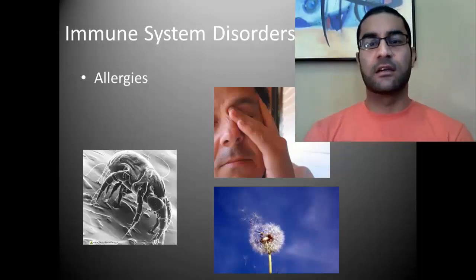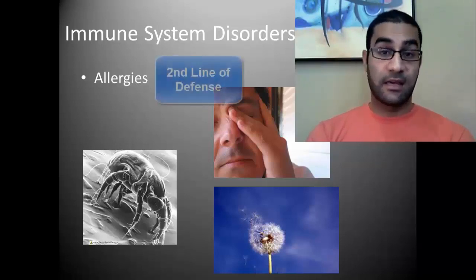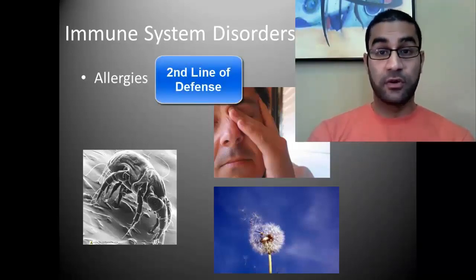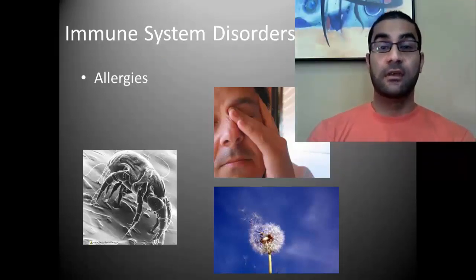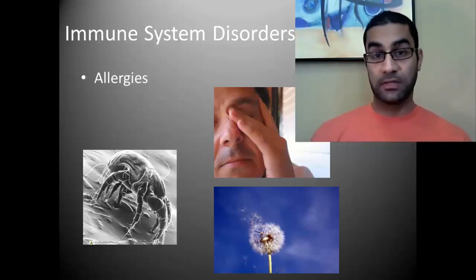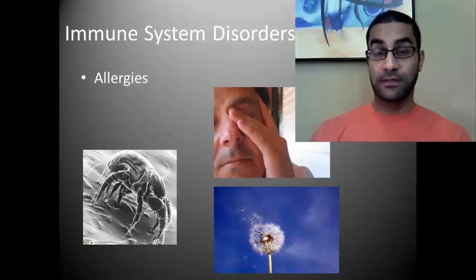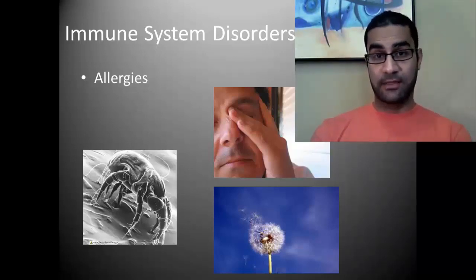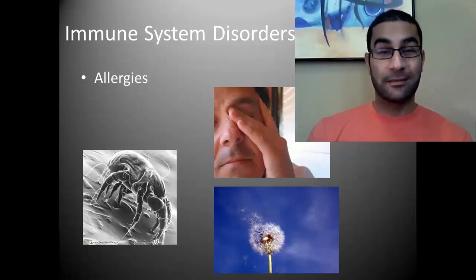Before we get into HIV, let's talk about some other categories of immune system disorders. Allergies — we discussed briefly with the second line of defense. Your second line of defense is responsible for recognizing anything your body sees as a threat and sending out the non-specific immune response against it, which is a release of histamine and then phagocytes coming to the site of infection to fight it off. In the process it produces symptoms like redness, swelling, heat, and fever to make it uncomfortable for the pathogen.